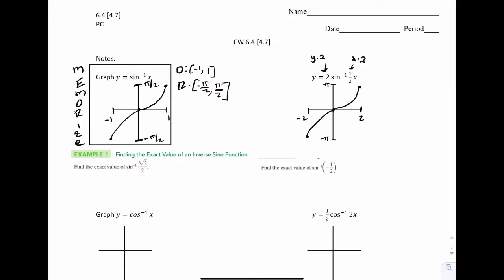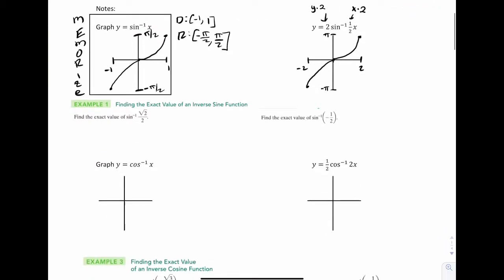Now, in terms of finding some values, it says find the exact value of sine inverse of √2/2. So recall, on our speed quizzes, I give you like sine of π/4, and you give me a value, right? That's √2/2.